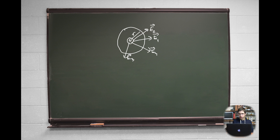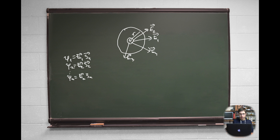Now we can calculate electric flux for each of these electric field vectors drawn. These electric field vectors drawn are not all, but only some that this object has. So φ1 = E1·S1, φ2 = E2·S2, and finally all the way to φn = En·Sn. Then we sum all of these electric fluxes up, and get the total electric flux: φ_total = φ1 + φ2 + ... + φn.